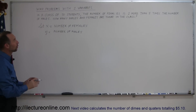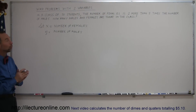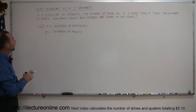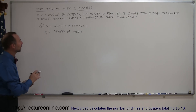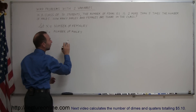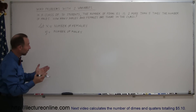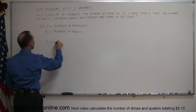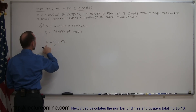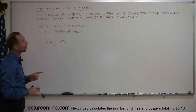Once you've done that, go back and read the problem, using x and y to come up with two equations. It says in a class of 50 students — since there are only males and females, and there are 50 total — that means x plus y equals 50: the number of females plus the number of males must add up to 50.